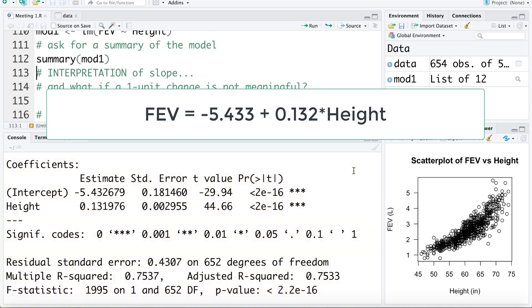Now let's quickly remind ourselves of the interpretation of those. The slope of 0.13 tells us that when height increases by 1 inch, we'd expect the FEV to increase by about 0.13 liters. And again, there's a lot of different ways to state this interpretation.